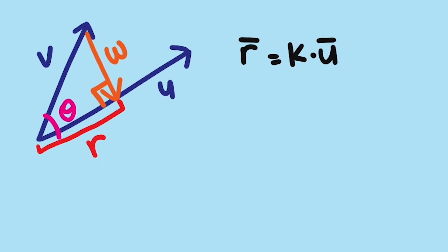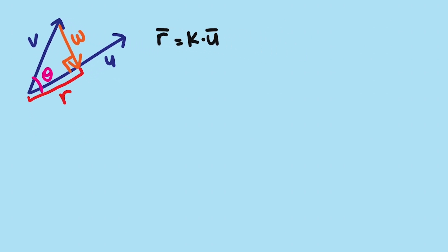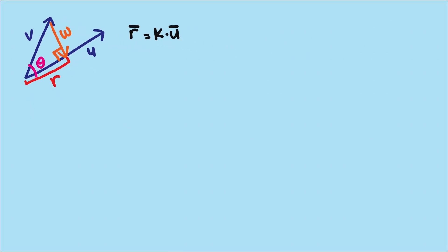Now what did we learn last video about perpendicular vectors? Oh yes, their dot product will always equal 0. So r dotted with w equals 0. But we're trying to express r as a scaled version of u. So k times u dotted with w equals 0.